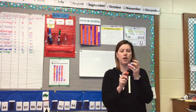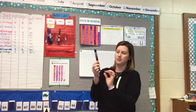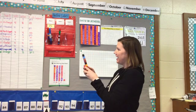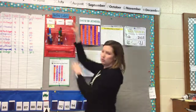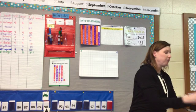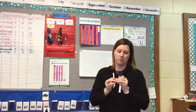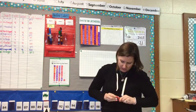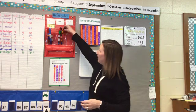Let's double check that we have 10: 1, 2, 3, 4, 5, 6, 7, 8, 9, 10. So we have 10, 20, and then 4 left over from the 8 that we spun. So we'll be starting a new 10-stick.